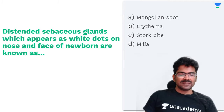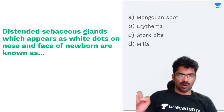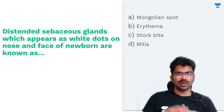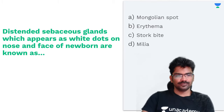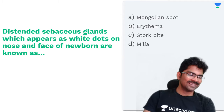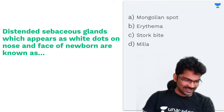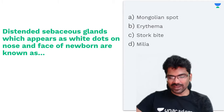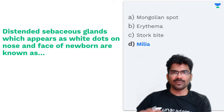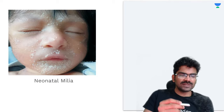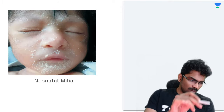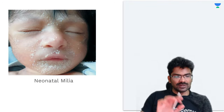Next question: Distended sebaceous glands which appear as white dots on the nose and face of a newborn are known as which of the following? Shivangi says D and Neha says C. Shivangi, excellent — you are correct. Neha also corrected her answer. The answer is milia — what you are seeing are distended sebaceous glands appearing as white dots. This is neonatal milia.